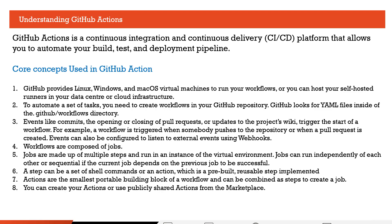For a CI/CD pipeline to be written, you need to define a workflow. That workflow has to be triggered on certain events — like a commit, opening or closing a pull request, updating a project wiki, or a scheduled trigger. Inside that workflow, there will be multiple jobs such as creating a NuGet package, publishing a NuGet package, testing a NuGet package, creating or deleting assets, and sending a Slack notification.